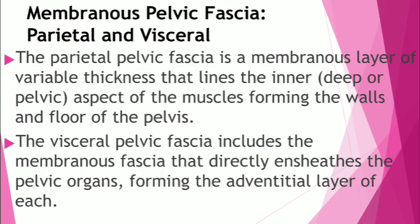Now let's talk about the parietal pelvic fascia — that's the parietal layer. The parietal pelvic fascia is a membranous layer of variable thickness. It lines the deep or pelvic aspect of the muscles that form the wall and floor of the pelvis. The parietal pelvic fascia covers the pelvic surfaces of the obturator internus muscle, the piriformis, the coccygeus, the levator ani, and part of the urethral sphincter muscles. There are specific parts of the pelvic fascia named according to the muscles they cover.